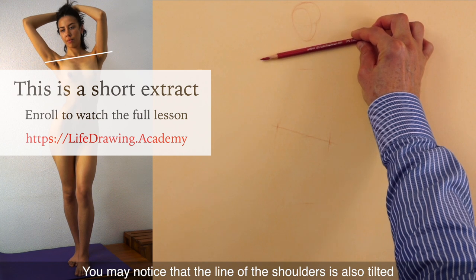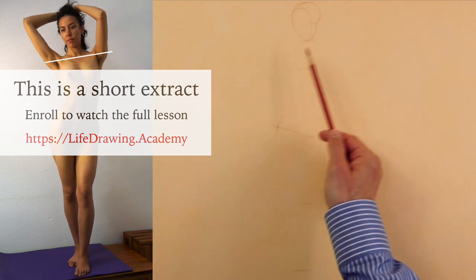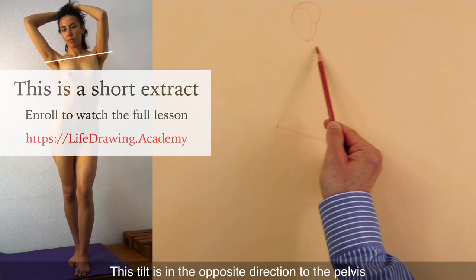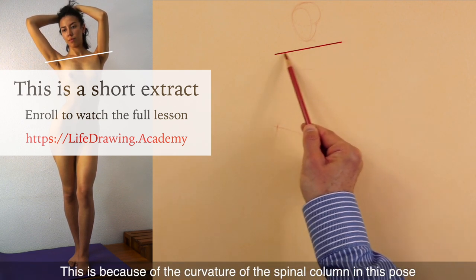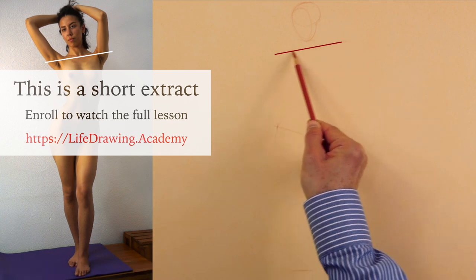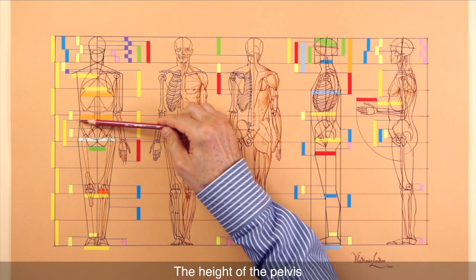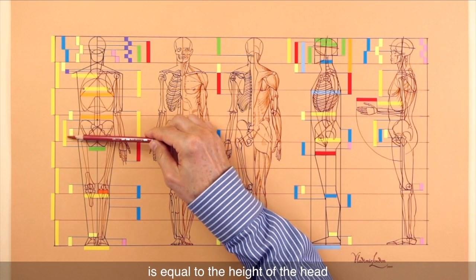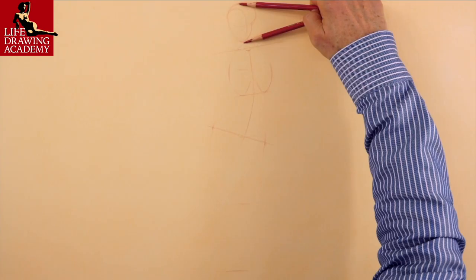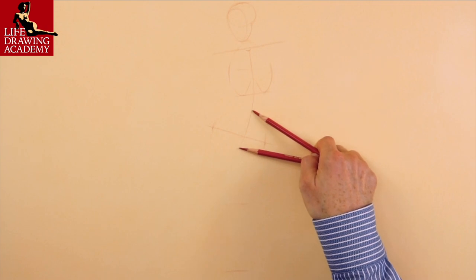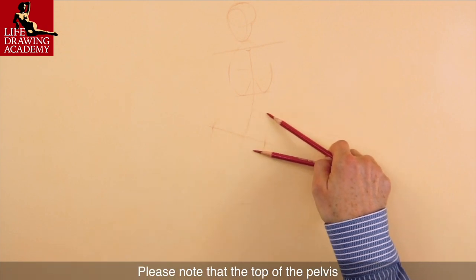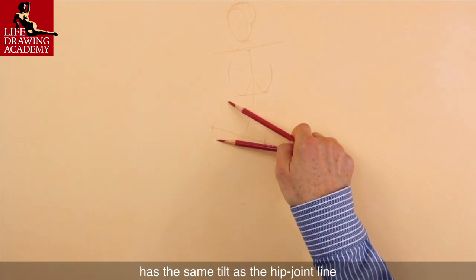You may notice that the line of the shoulders is also tilted. This tilt is in the opposite direction to the pelvis. This is because of the curvature of the spinal column in this pose. The height of the pelvis is equal to the height of the head. We apply this proportion in drawing. Please note that the top of the pelvis has the same tilt as the hip joint line.